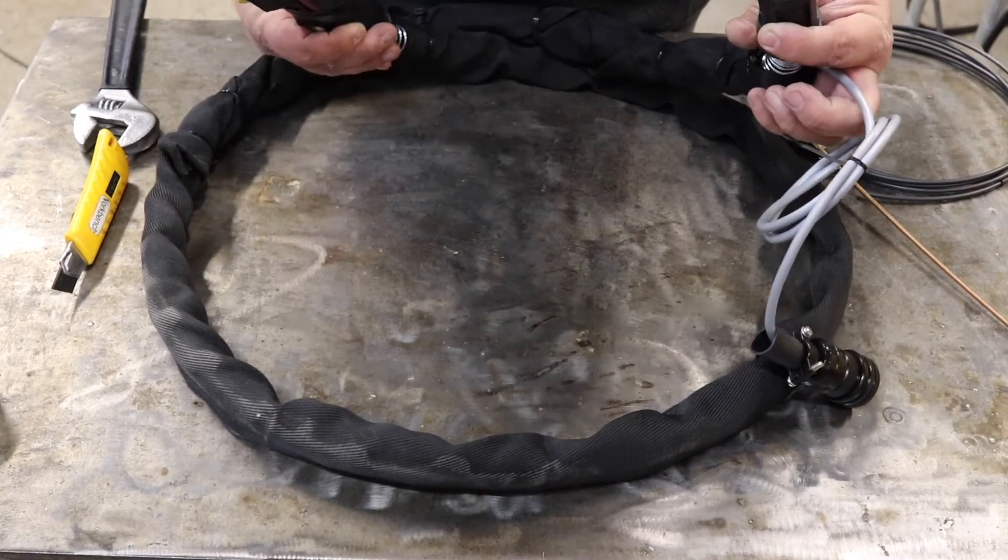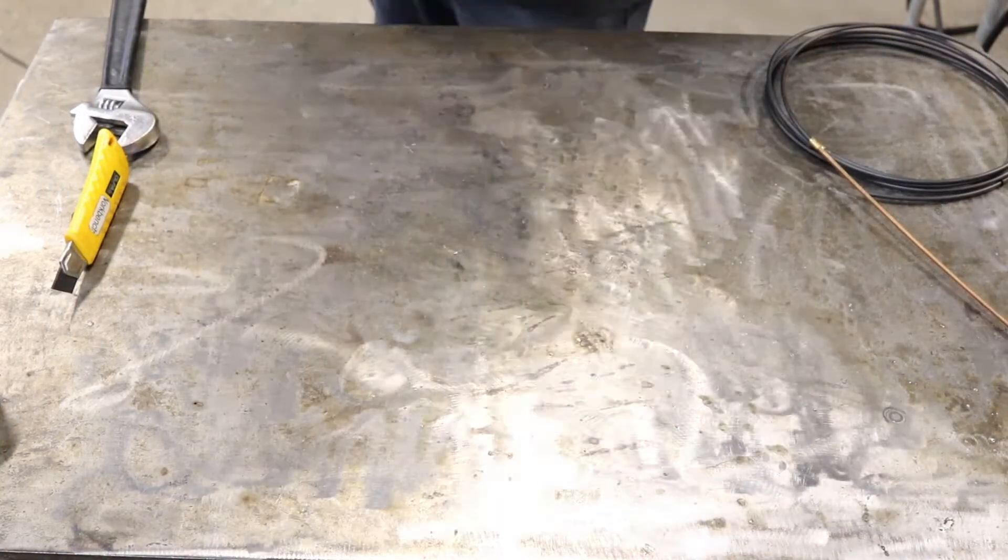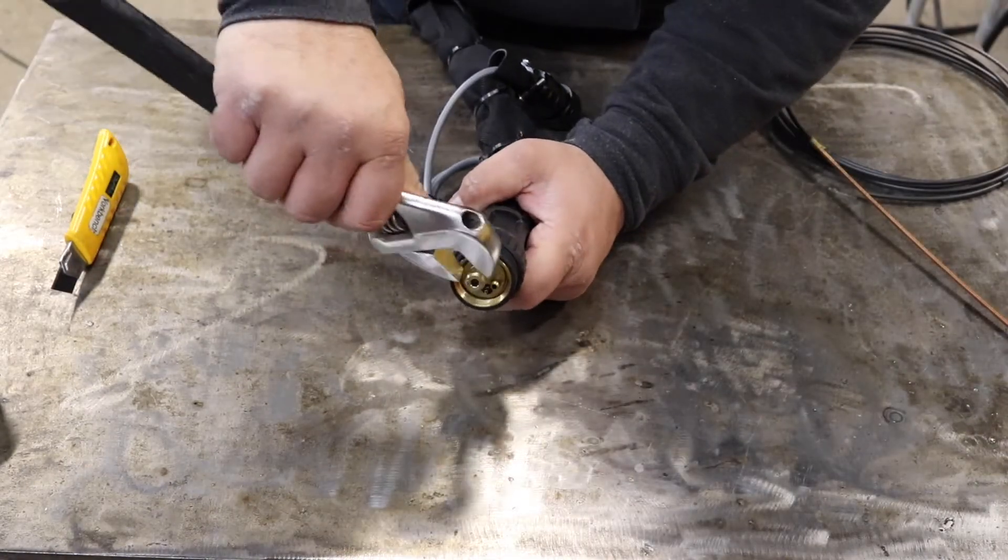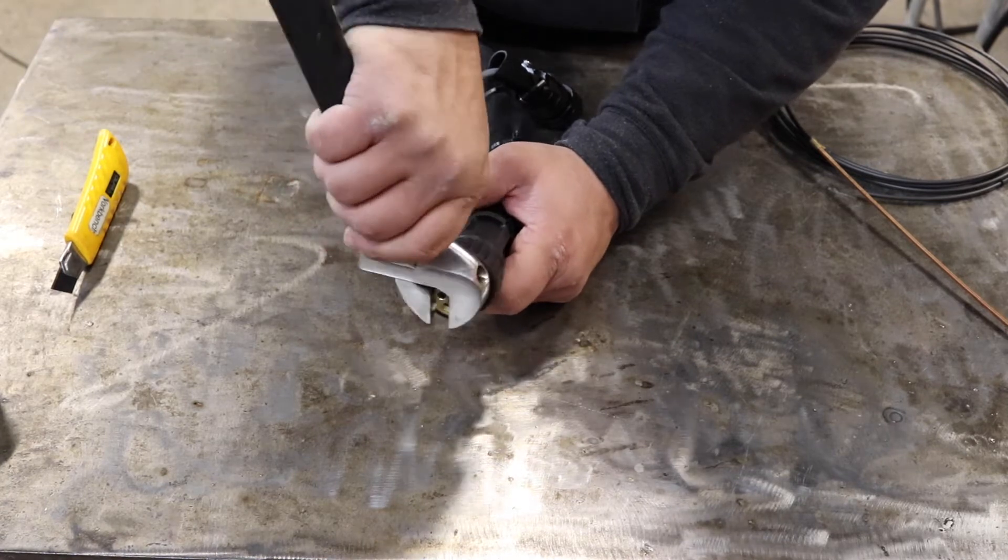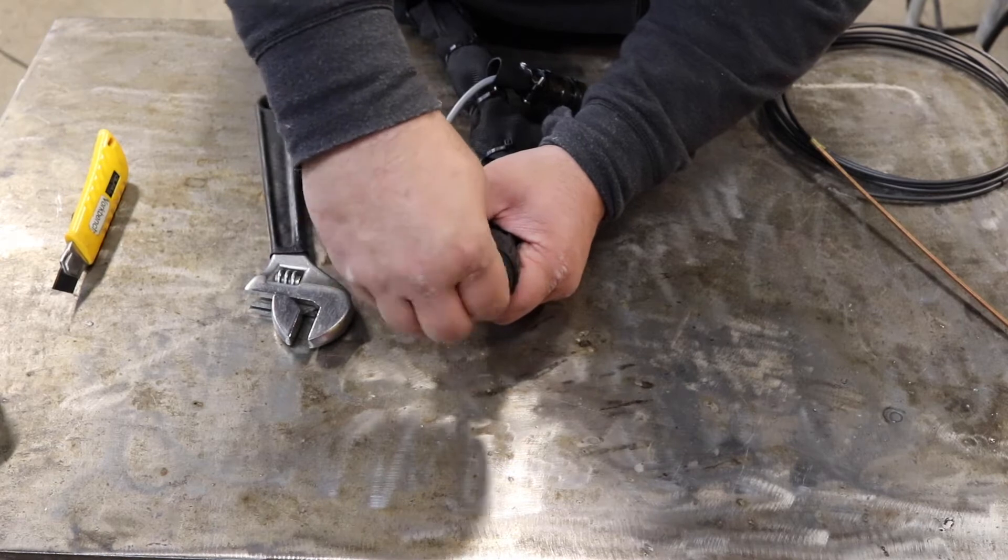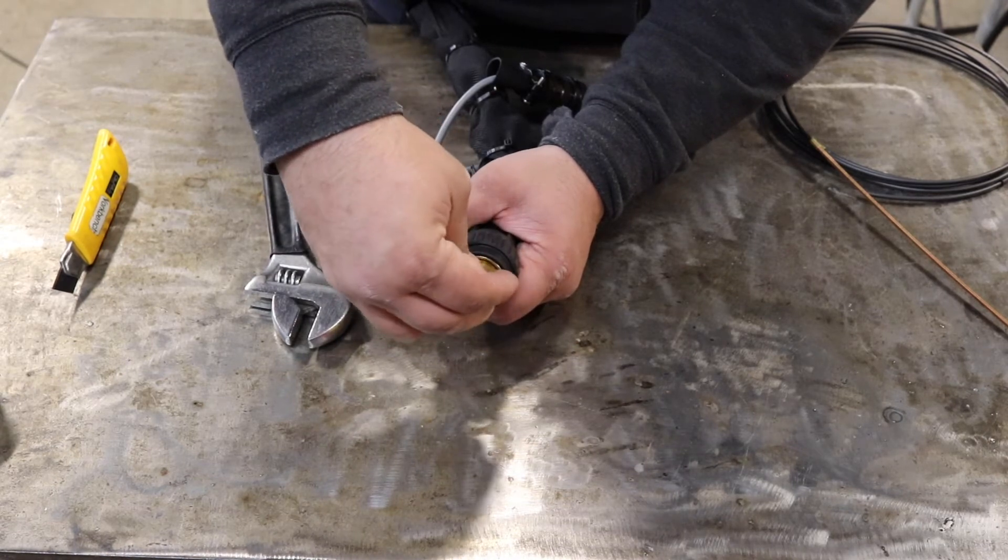You have to straighten the gun all the way out. Then you take the liner retaining nut off of the end. You can use a tip wrench, pair of pliers. Unscrew the liner retaining nut.